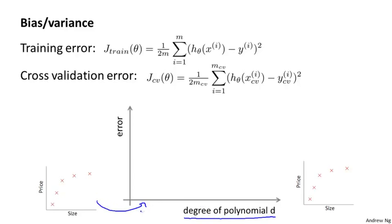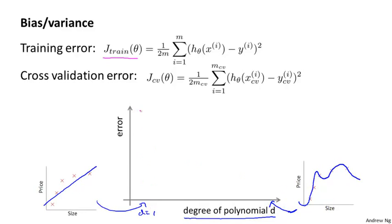Way on the left of this figure, where maybe d equals one, I'm fitting very simple functions, whereas way on the right I have much larger values of d — a much higher degree polynomial — corresponding to fitting much more complex functions to your training set. As we increase the degree of the polynomial, we're able to fit our training set better and better. If d equals one, we have a relatively high training error, but if we have a very high degree polynomial, our training error will be really low — maybe even zero. So as we increase the degree of polynomial, the training error decreases.